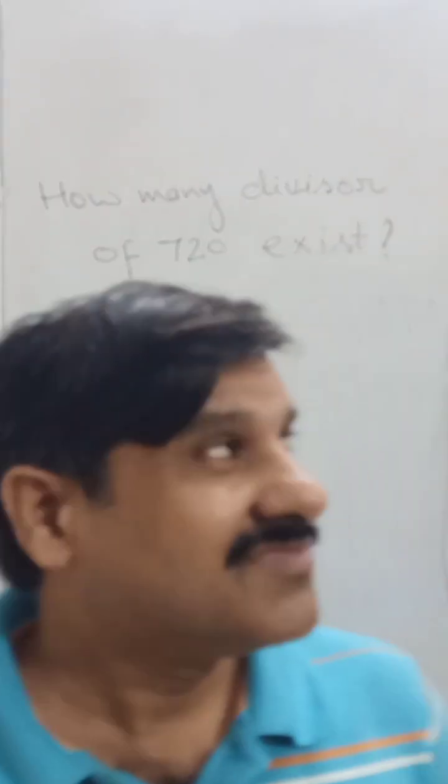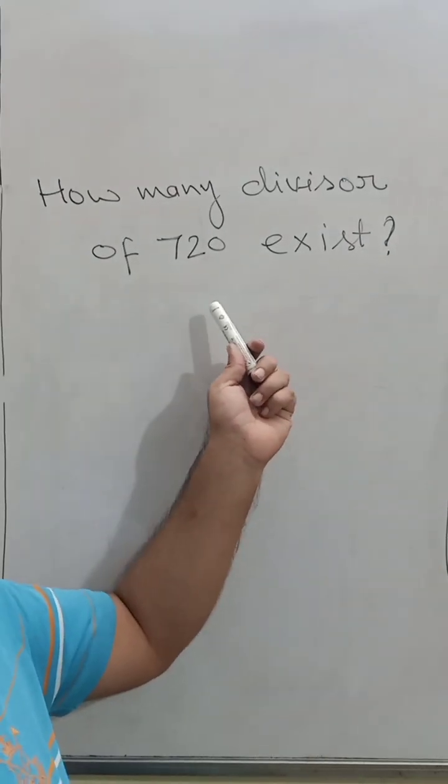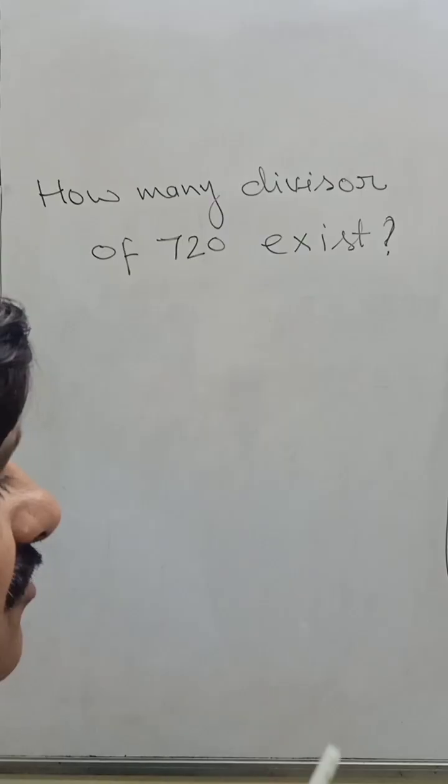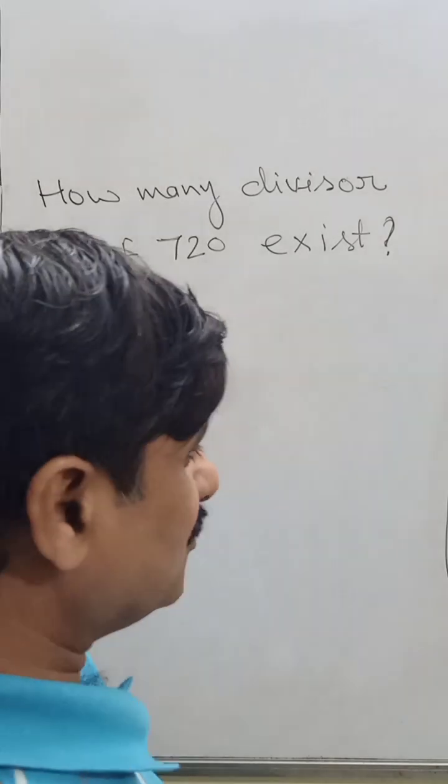Here is a question. How many divisors of 720 exist? This is a question of permutation combination.